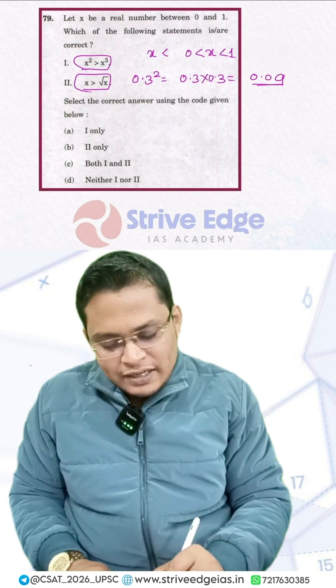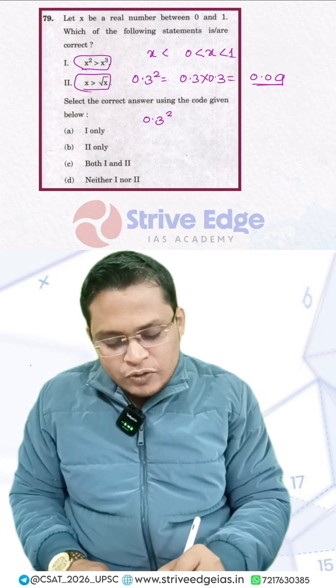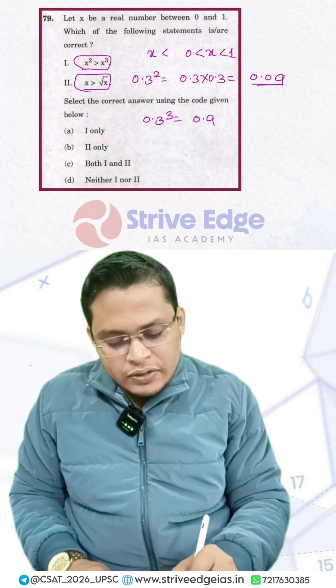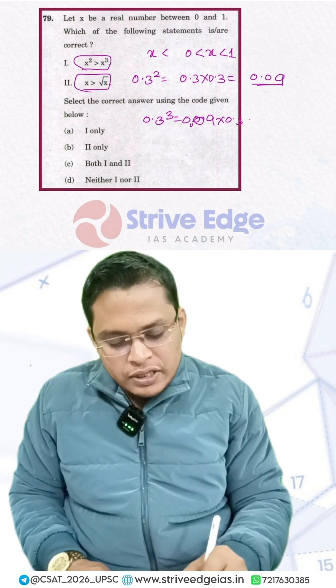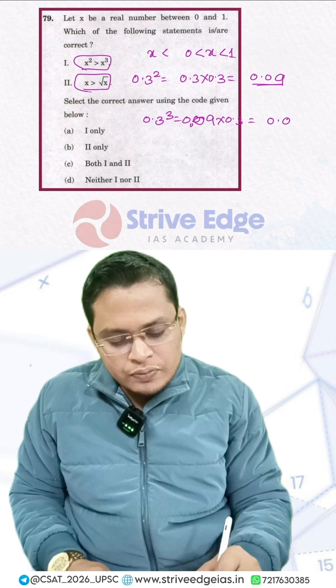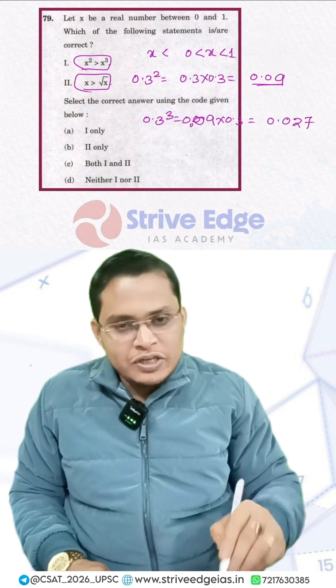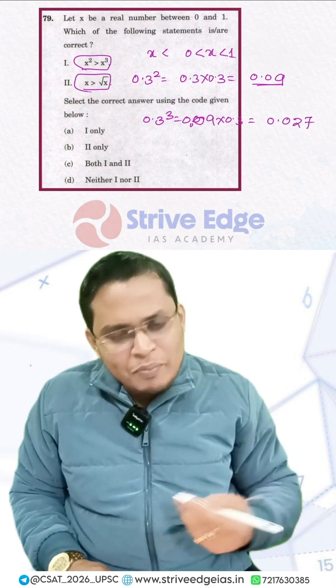Same thing I can write, what is the value of 0.3 cube? So it is 0.9 into 0.09, 0.09 into 0.3. So it will be 0.027. So you can see here again the value of the number is decreased.